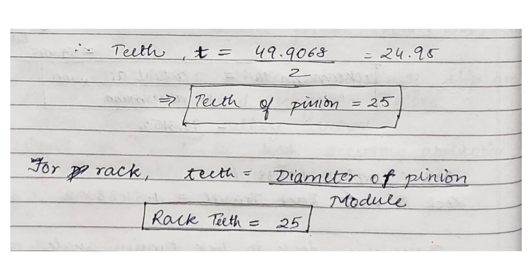We keep the value in this formula, T equals D by 2, that comes out to be 24.95, that is 25 teeth. Similarly for the rack, we keep the value of teeth equal to diameter of pinion upon module, which comes out to be 25.